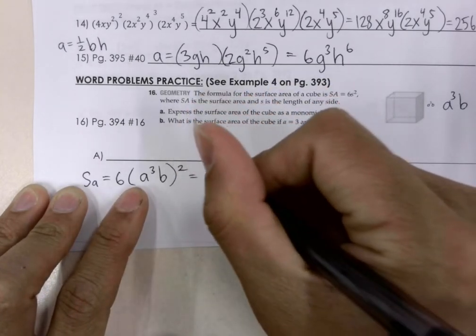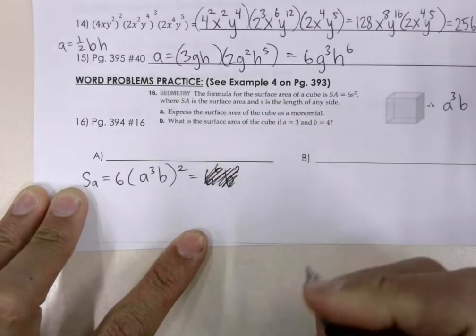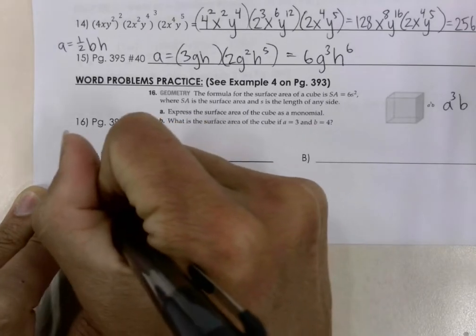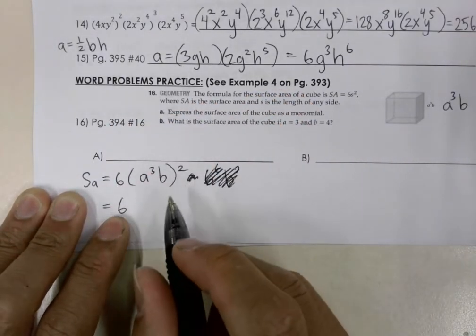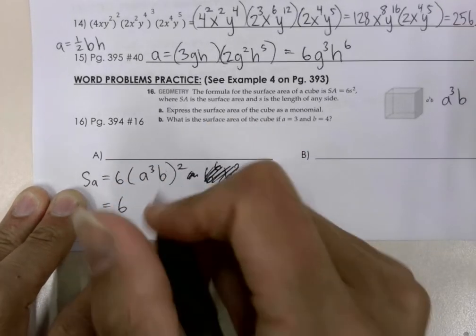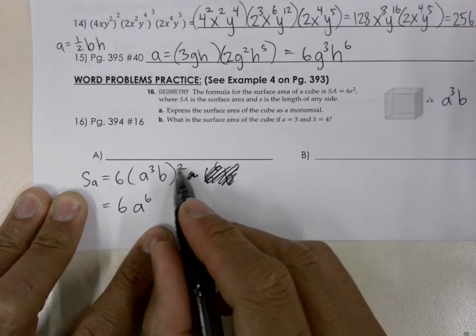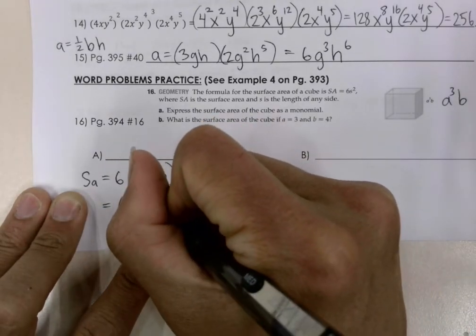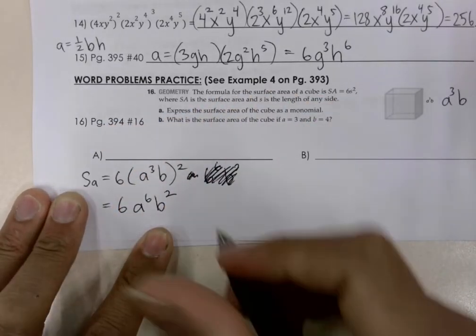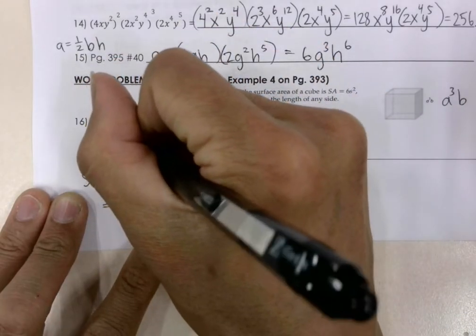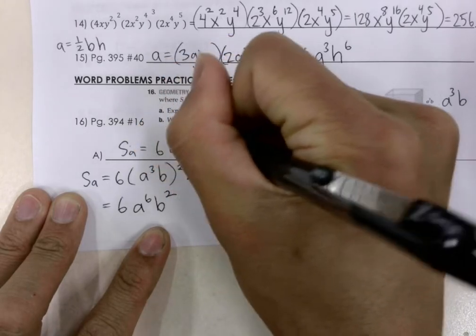Oh, my goodness, I messed up here. So let me go ahead and fix this here. It is going to equal to 6, unaffected by the power of 2. And then here with 2, we're going to go ahead and distribute out. This is A to the power of 6. My mistake. And then we're going to distribute out the power of 2 here. So we get b to the 1 times 2. So that's b to the 2. So my answer for A is the surface area is equal to 6a to the 6b squared.